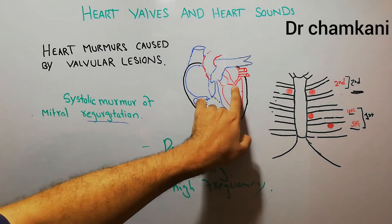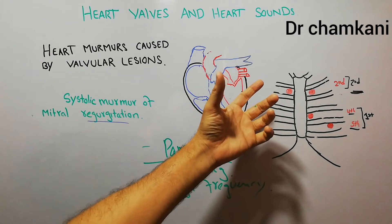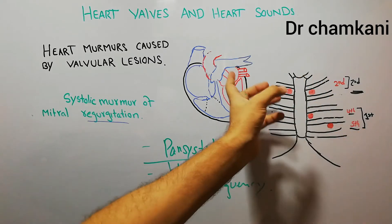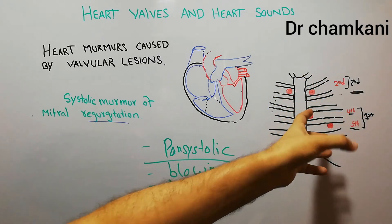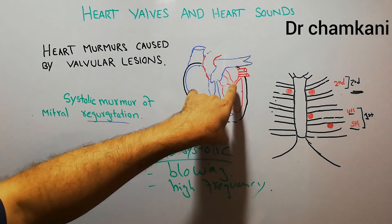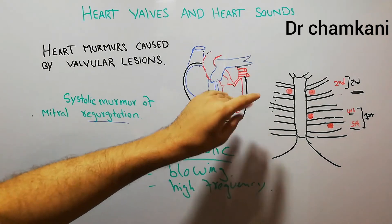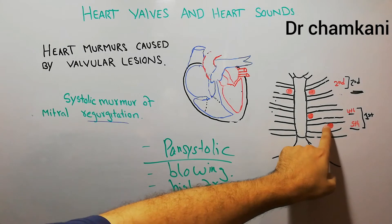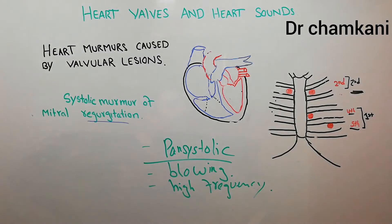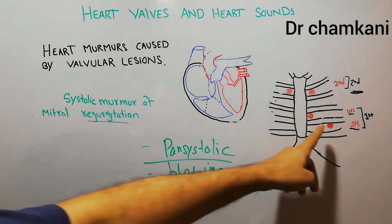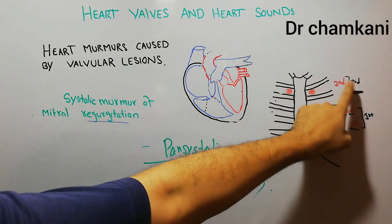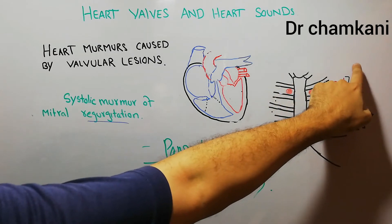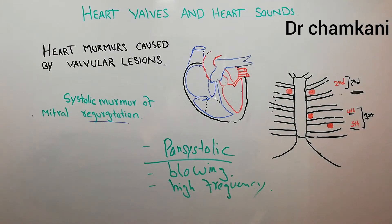The position of the mitral valve is posterior within the chest, so it cannot be listened to easily. It is best heard around the apex in the mitral area — this is the place where it can be heard properly. There is also radiation of this murmur into the axilla, which is located around here in the chest, so this sound also radiates into the axilla.